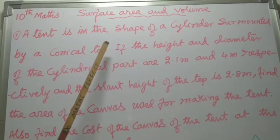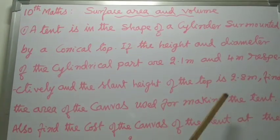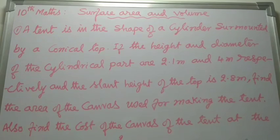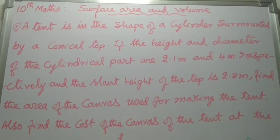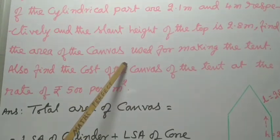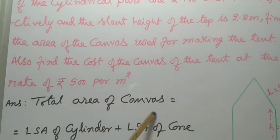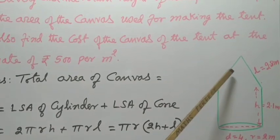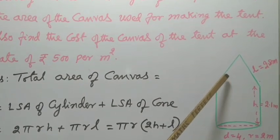Dear students, the same problem, if you know perfectly, then we can do it in a short form. So, I will show that also, total surface area of canvas equal to lateral surface area of cylinder plus lateral surface area of cone.